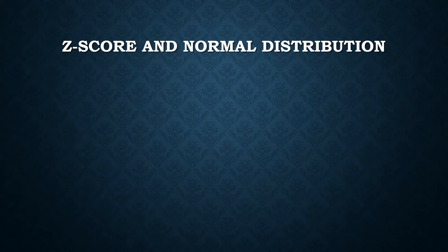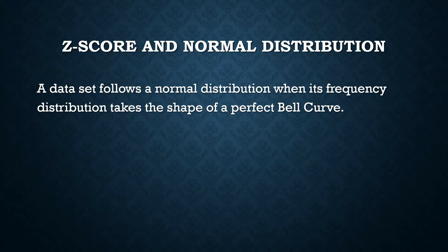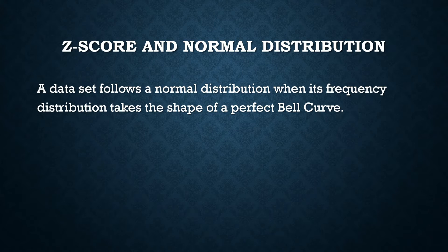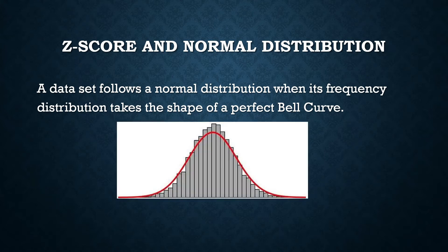Before we go there, let us introduce the meaning of normal distribution. A data set follows a normal distribution when its frequency distribution — imagine the histogram, the bar chart — takes the shape of a perfect bell curve or something close to a bell curve.